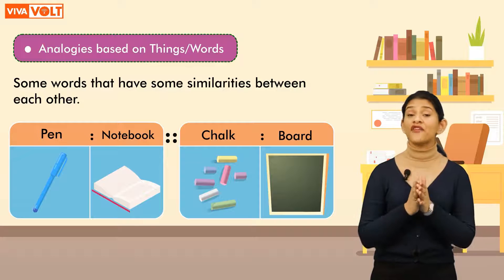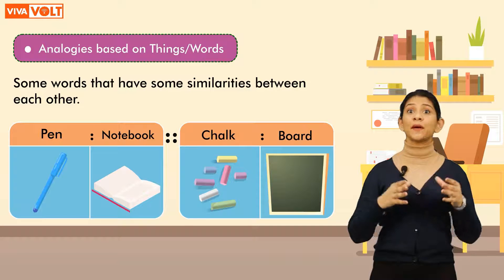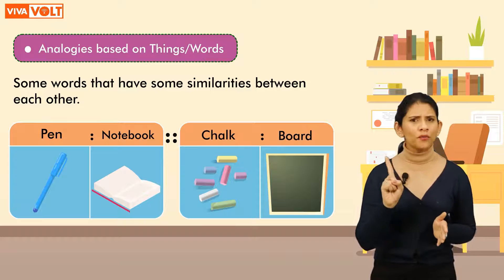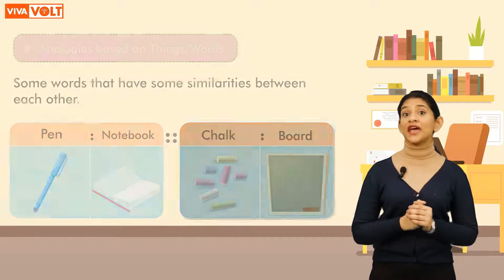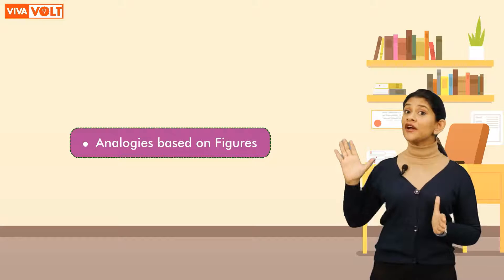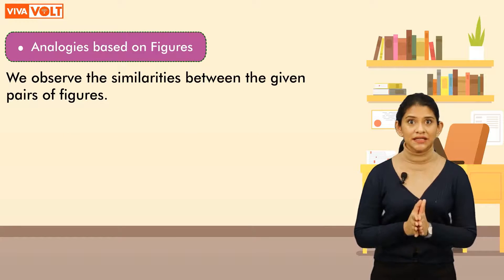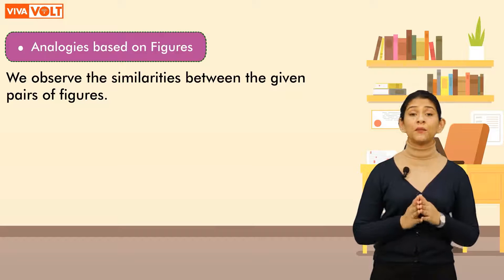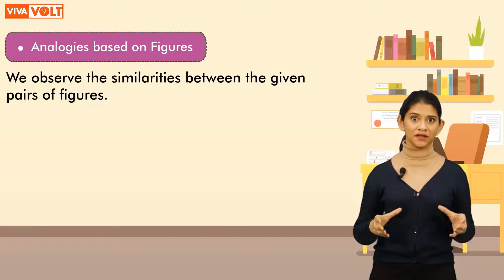Wasn't this easy? You just have to observe the given words carefully and find out the similarities between them. There is one more kind of analogy, and that is analogy based on figures. In this type, we observe the similarities between the given pairs of figures.